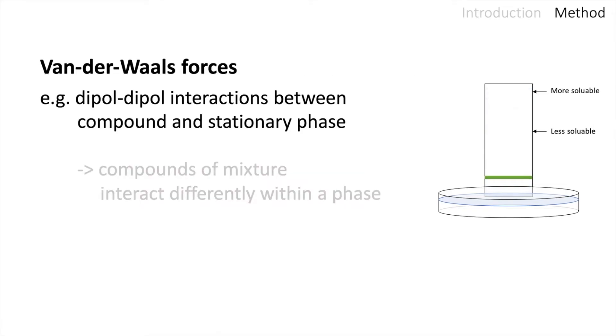Responsible for the interaction between a compound and the stationary phase are for example dipole-dipole interactions. These are an example for van der Waals forces. The compounds of the mixture interact differently within a phase. So you can see the green one is more soluble and the orange band is less soluble since it does not travel as far.